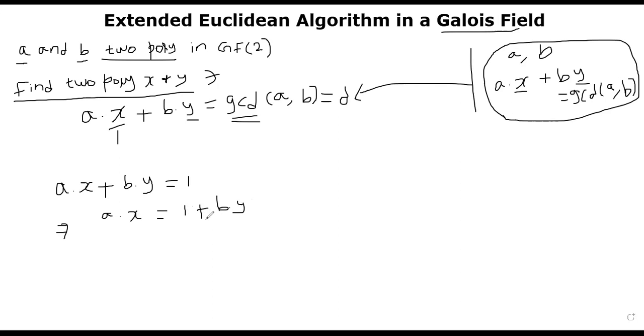And then if you take mod on both sides with respect to mod B, what you get is that A times X is congruent to 1 mod B. X is the inverse of A. So X is equal to A inverse. That's it. So this is how you can find inverse of a polynomial in Galois field.